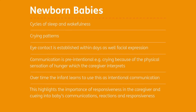Eye contact is established within days, as well as facial expressions. When a child is feeding, they're often looking into their caregiver's eyes, and we interpret some of their facial expressions. Smiles can often develop very early as well. We describe communication at this stage as pre-intentional, meaning that the child is communicating without almost realising there's an intent. An example would be a child crying when they're hungry — in the beginning that's about the physical sensation of being hungry and the unpleasant feeling that gives them.